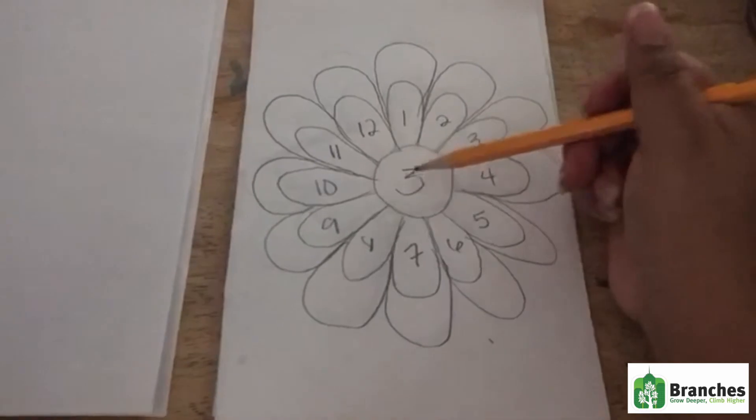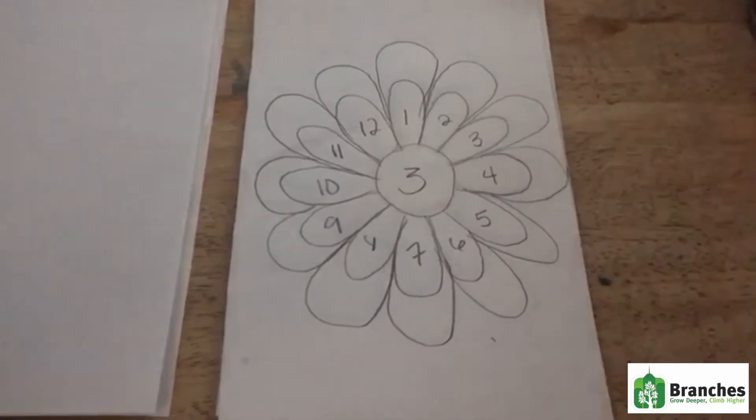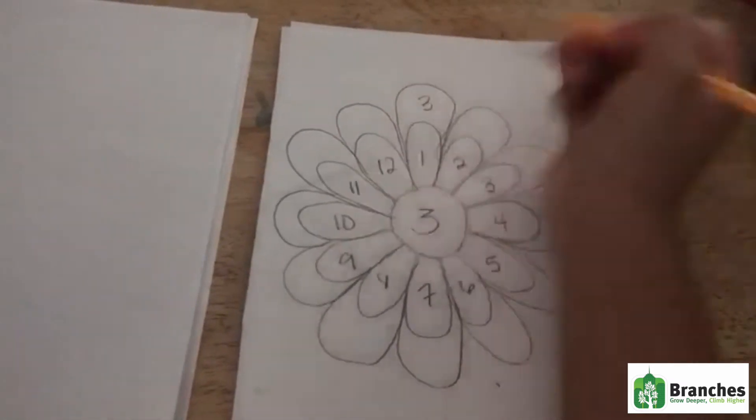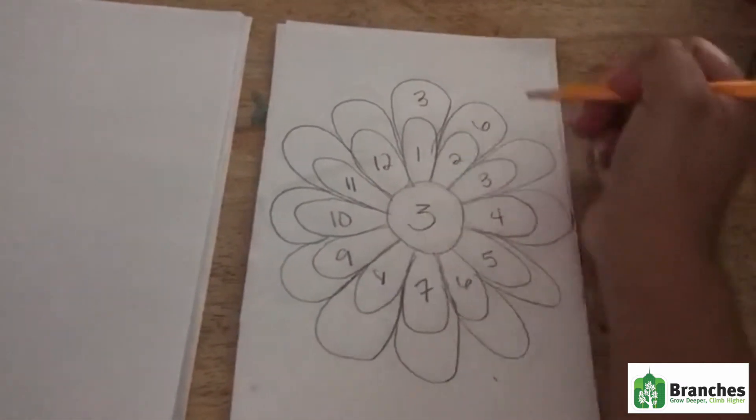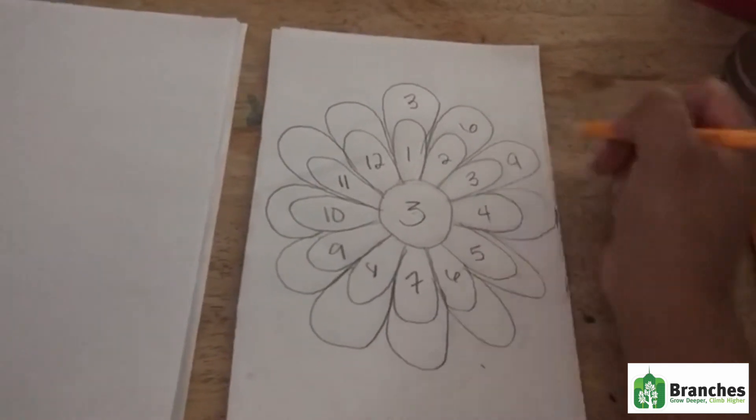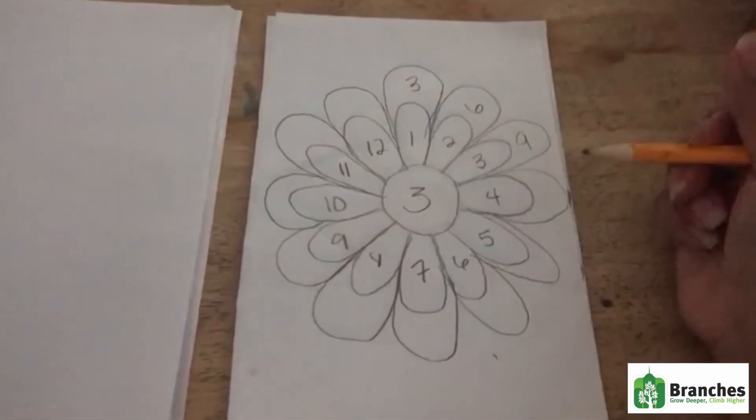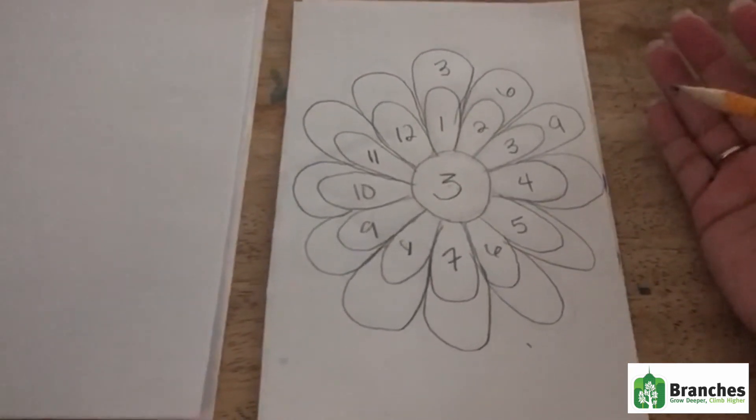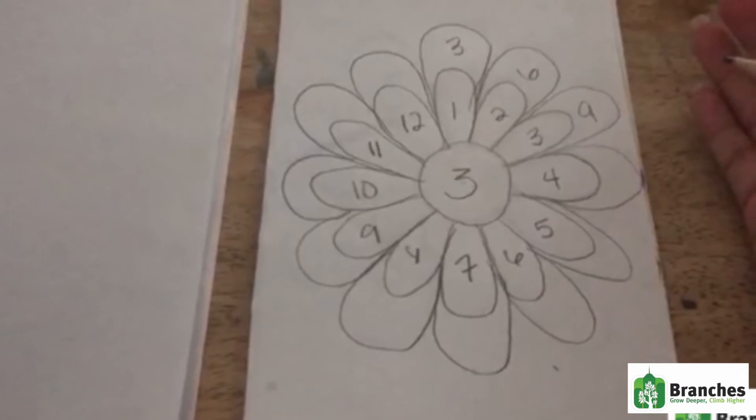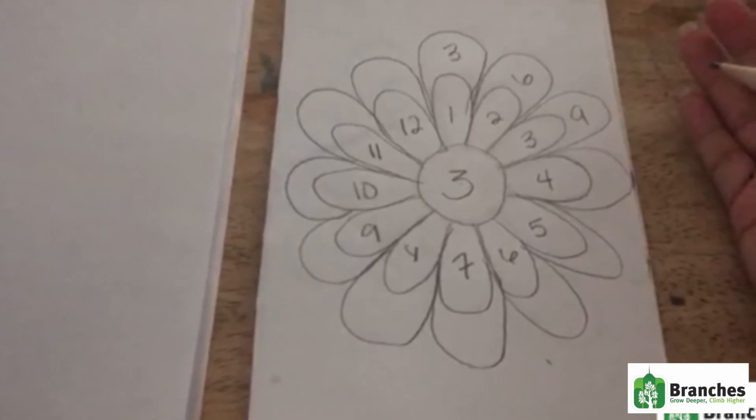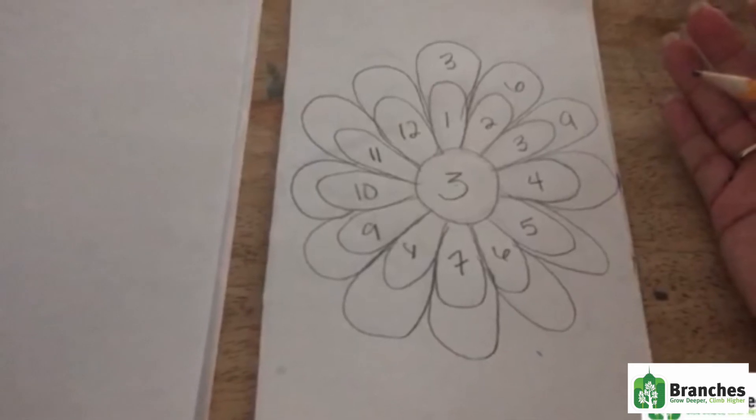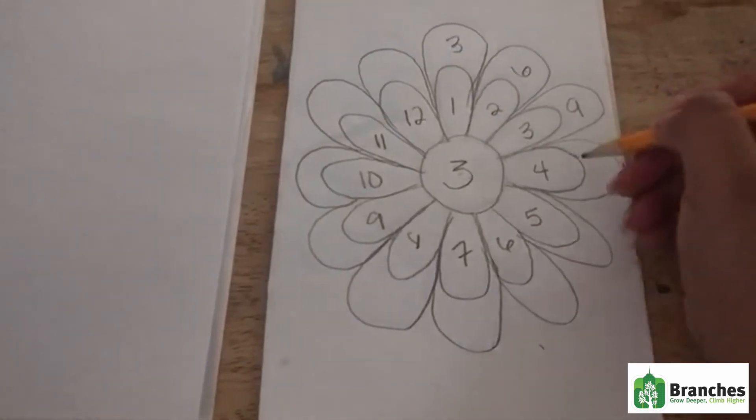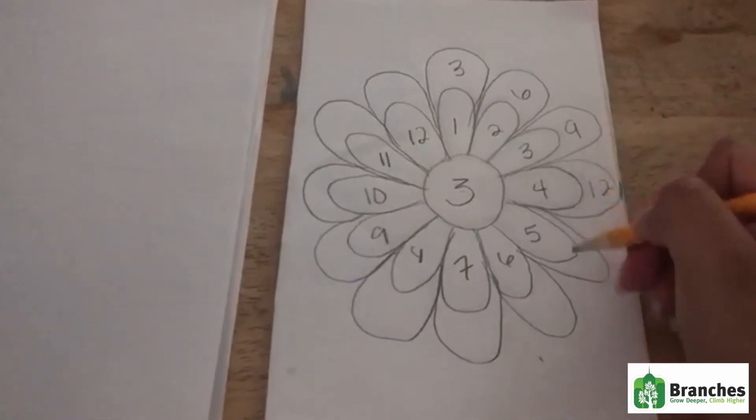Now we're gonna do three times one equals what? Three. Three times two equals what? Six. And then we're gonna continue and so on filling the rest of the chart. I'm gonna pause it here and say you guys can try it and then continue filling out the answers.